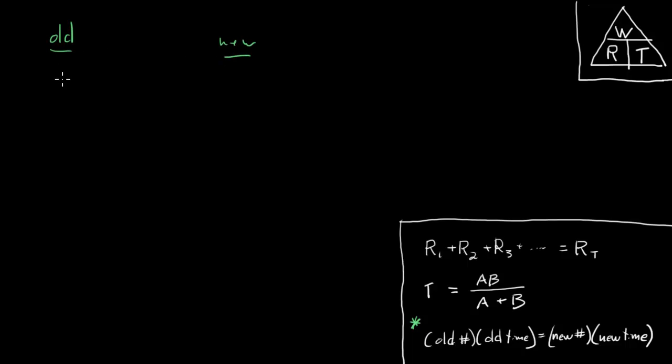So what is the old situation? Well we are told that four machines of a certain type can produce a total of x units of product P in six days. So these four machines can do x units in six days.